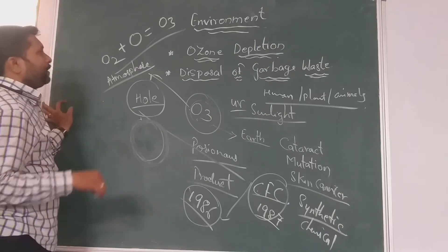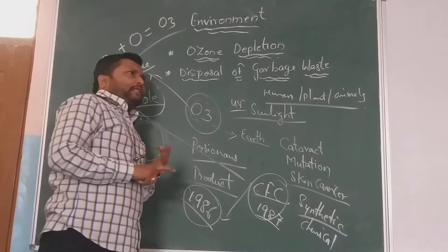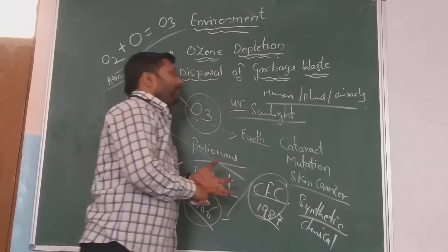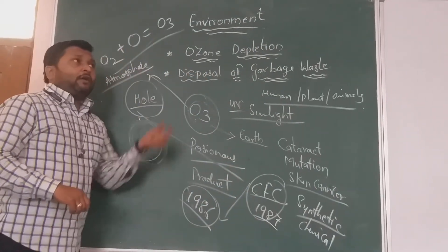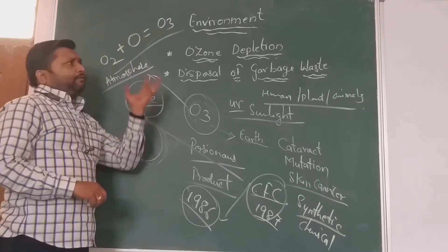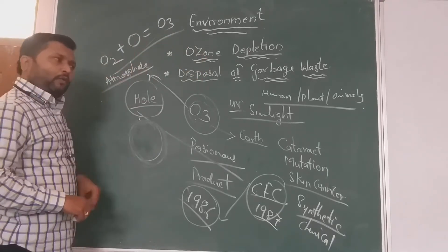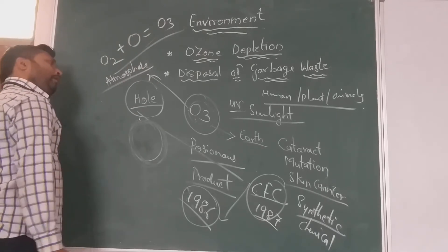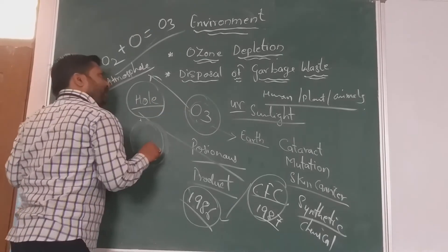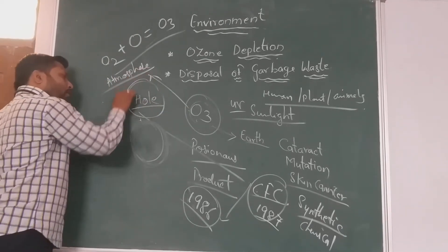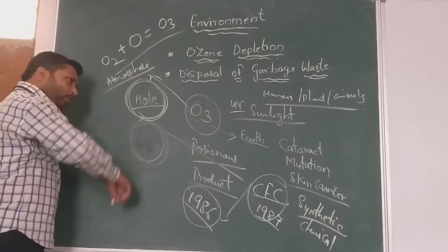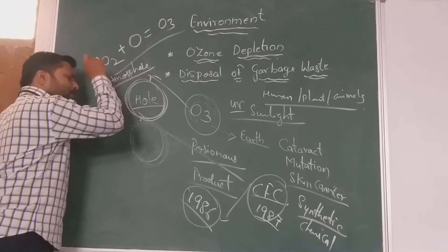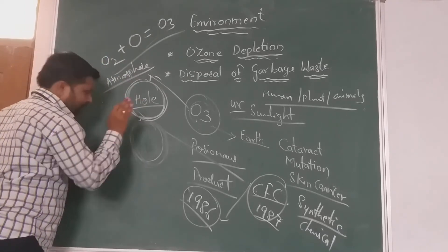Based on this, there is an activity. We have to collect information from the internet or the library regarding ozone depletion — what chemicals are there which may lead to the depletion of the ozone, and also how big the holes are in the ozone layer. Regarding that, you have to collect certain information.